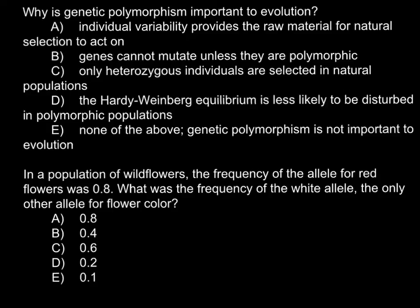I can give you a hint: this is not answer E — there is a correct answer, so you have four answers left. Next, answer D: the Hardy-Weinberg equilibrium is least likely to be disturbed in polymorphic populations. This is also not true. Polymorphism doesn't affect Hardy-Weinberg equilibrium. What does affect it is non-random mating, gene flow into or out of the population, and some other factors. So we can cross out this answer.